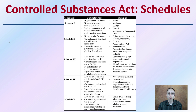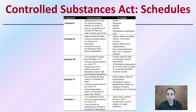The Controlled Substances Act schedules include Schedule 1, 2, 3, 4, and 5. Schedule 1 is considered to have the highest potential for abuse, no current accepted medical use in the United States, lack of an acceptable level of safety, and use under medical supervision.